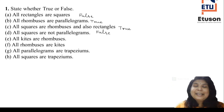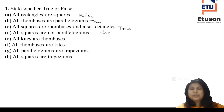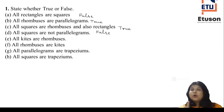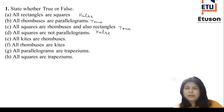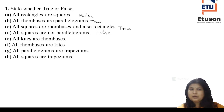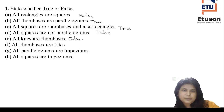Next: All kites are rhombuses. Do you remember what a kite is? In a kite, adjacent sides are equal, but not necessarily all the sides are equal — which is the required criteria for a rhombus. For a rhombus, all sides have to be equal, but in case of a kite, only adjacent sides are equal. So the statement is false — all kites are not rhombuses.